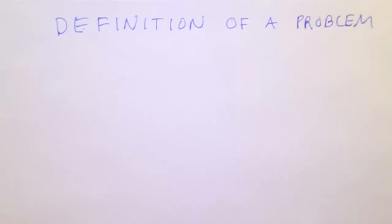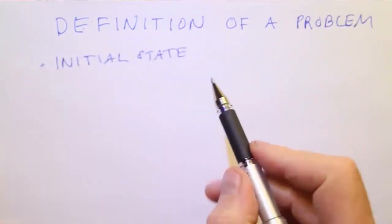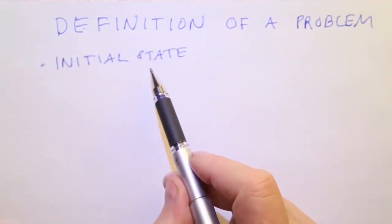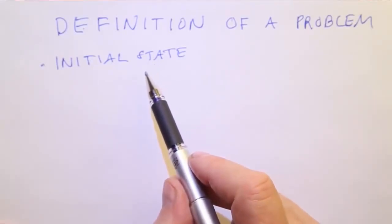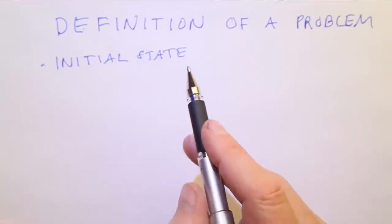Now let's formally define what a problem looks like. A problem can be broken down into a number of components. First, the initial state that the agent starts out with. In our route finding problem, the initial state was the agent being in the city of Arad.